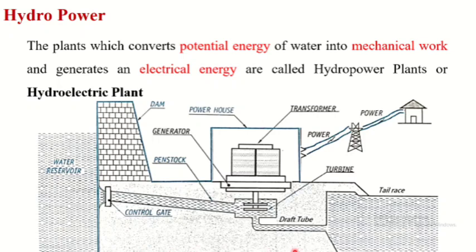The figure shows a schematic representation of a hydroelectric plant. It consists of a water reservoir, dam, control gate, penstock, generator, powerhouse, transformer, turbine, draft tube, and tailrace. The dam is created with a strong concrete structure so that it can withstand the water pressure stored in the reservoir. The penstock is a long pipe made of steel or steel-bonded concrete, which is used to supply water from the reservoir to the powerhouse. The powerhouse is a unit which consists of a generator, hydraulic turbine, and transformer.